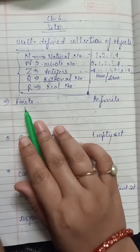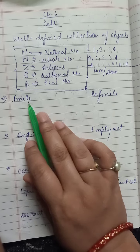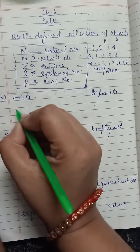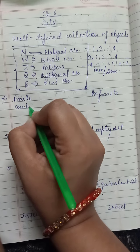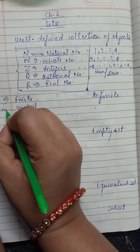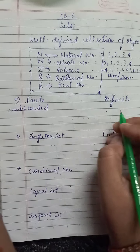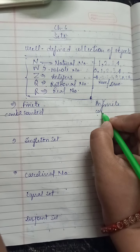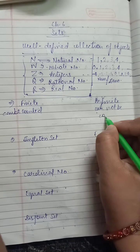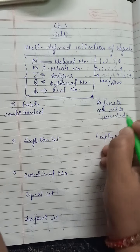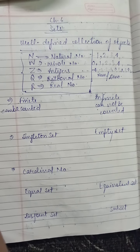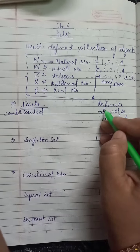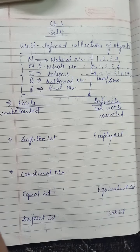Now let us begin the types of sets. The first is finite set — if the number of elements can be counted, then it is a finite set. Infinite set — if the number of elements cannot be counted, then it is an infinite set. If the number of elements can be counted, it is finite; if it cannot be counted, it is infinite.